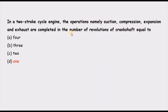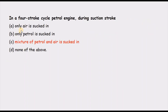In a two-stroke cycle engine, all operations are completed in how many revolutions of the crankshaft? As the name indicates, all processes in the cycle happen within two strokes — the piston goes down and comes back up — during which the crankshaft rotates once. So the correct answer is one revolution.